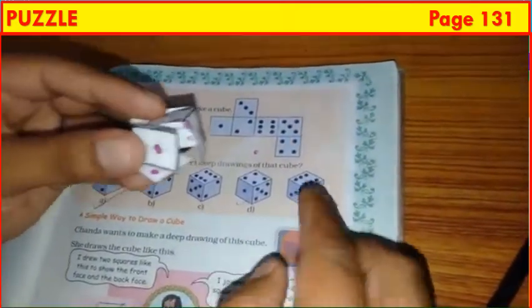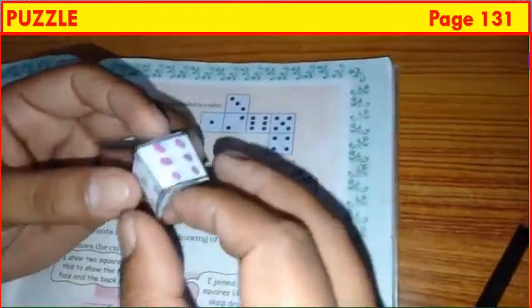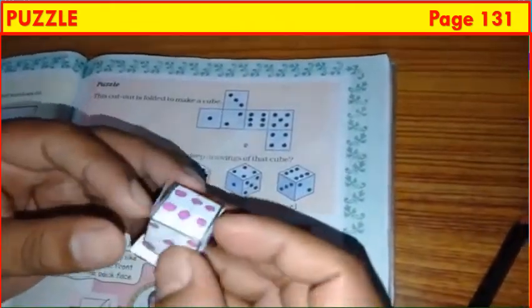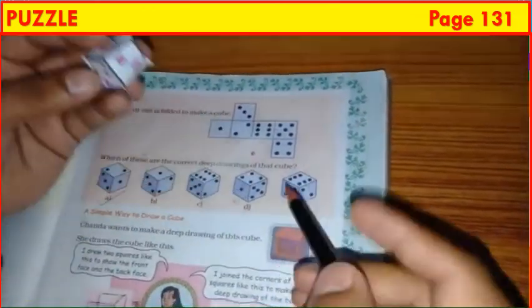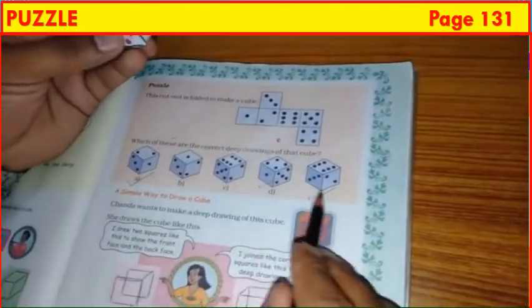Now, consider figure E. Top has 6. Left side has 3. And right side has 2. So, put a tick mark. So, figure A, D and E are correct.